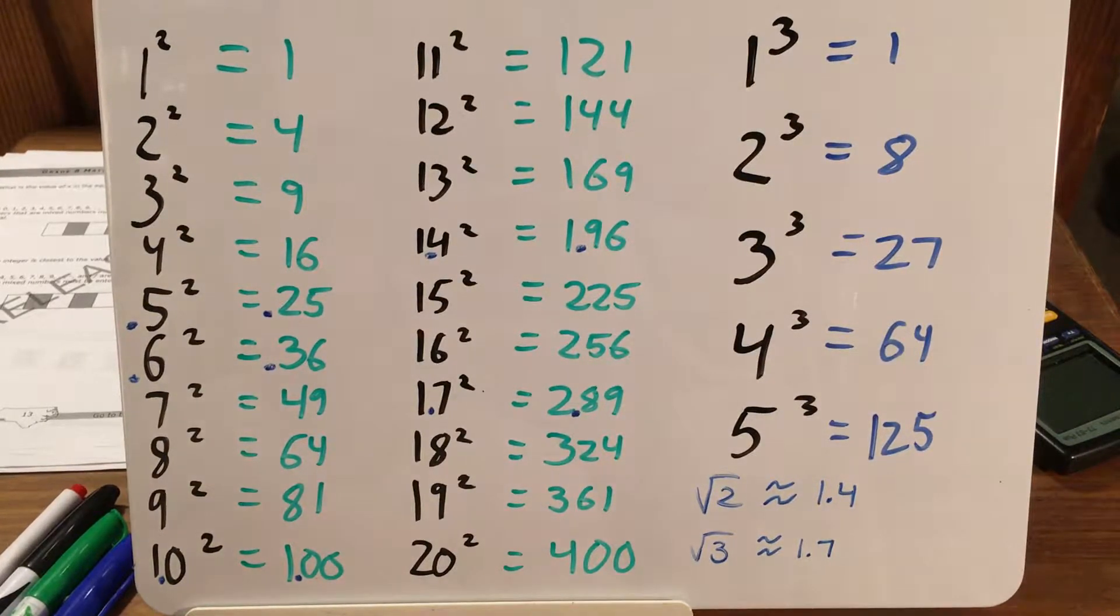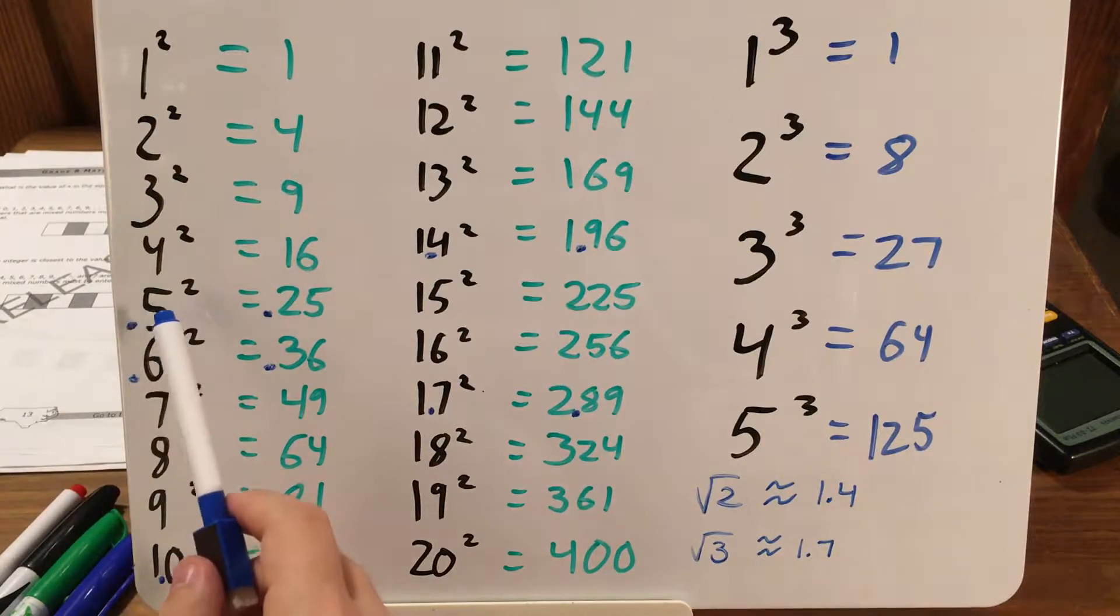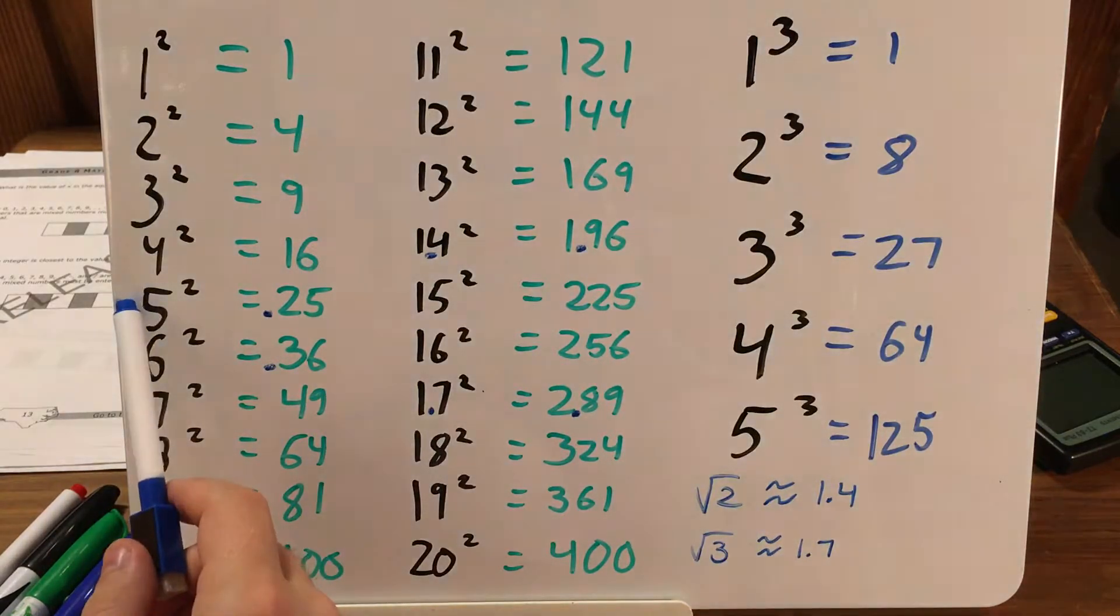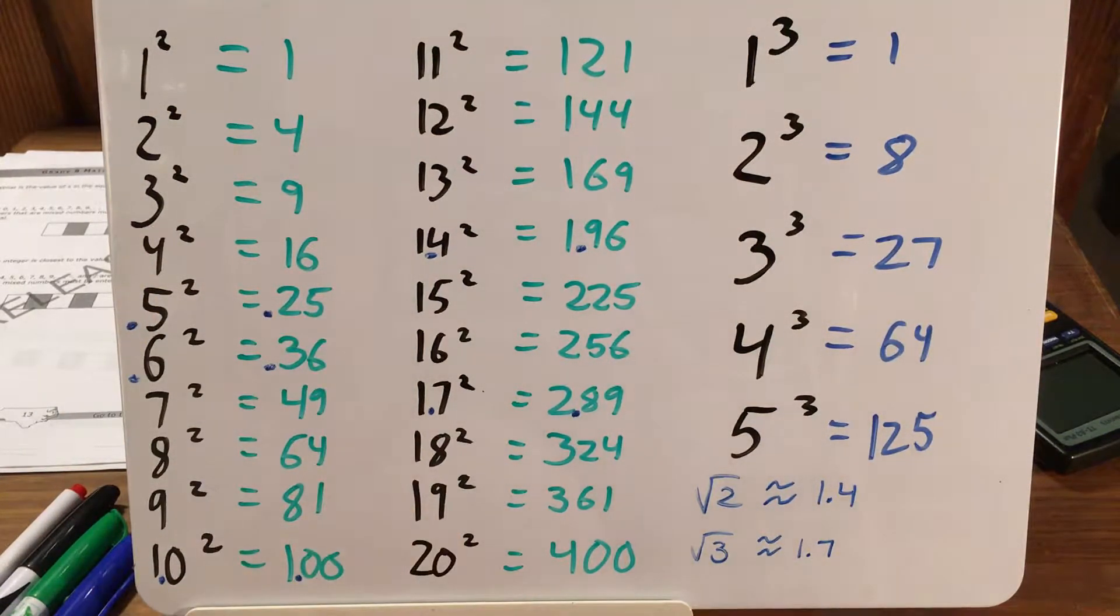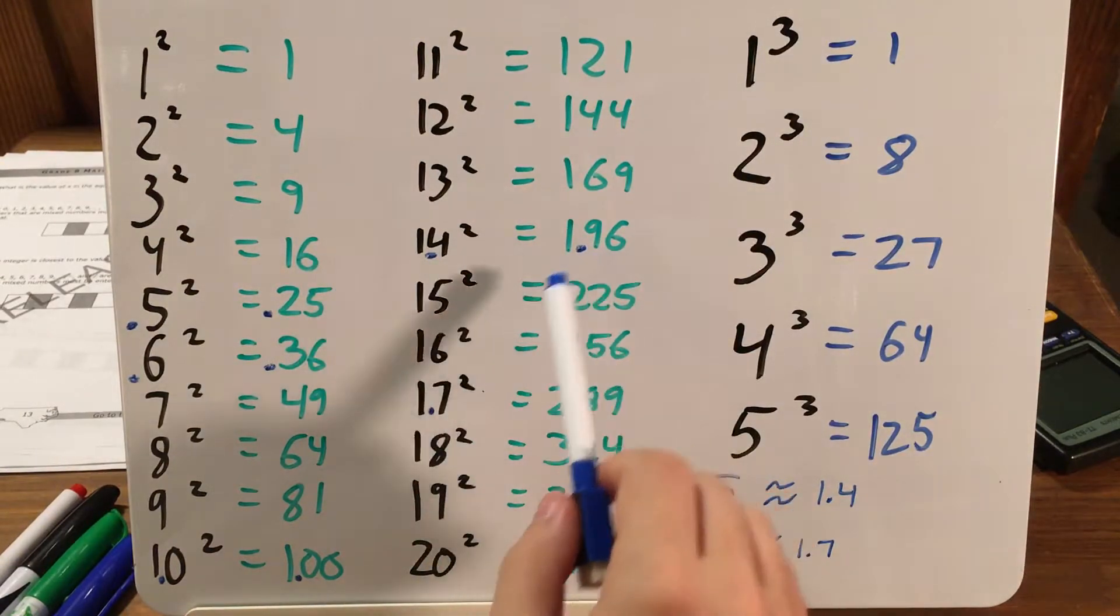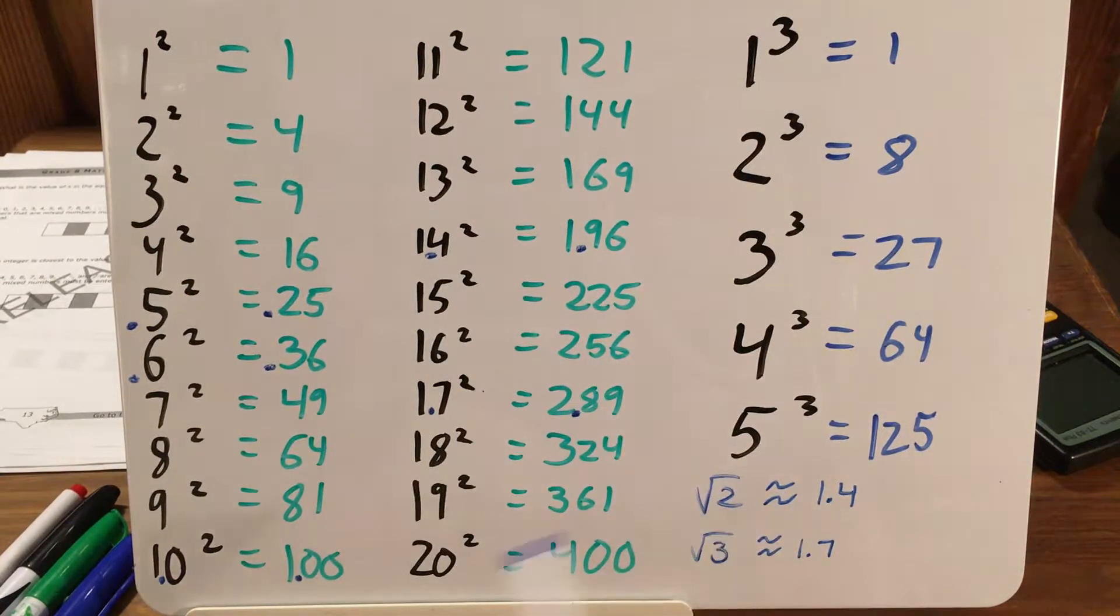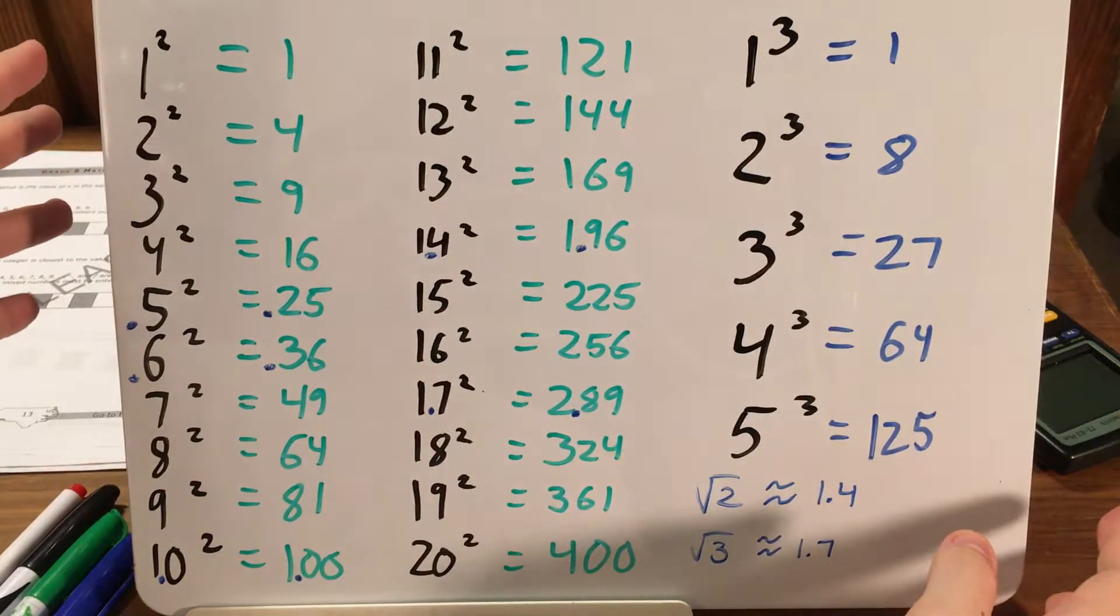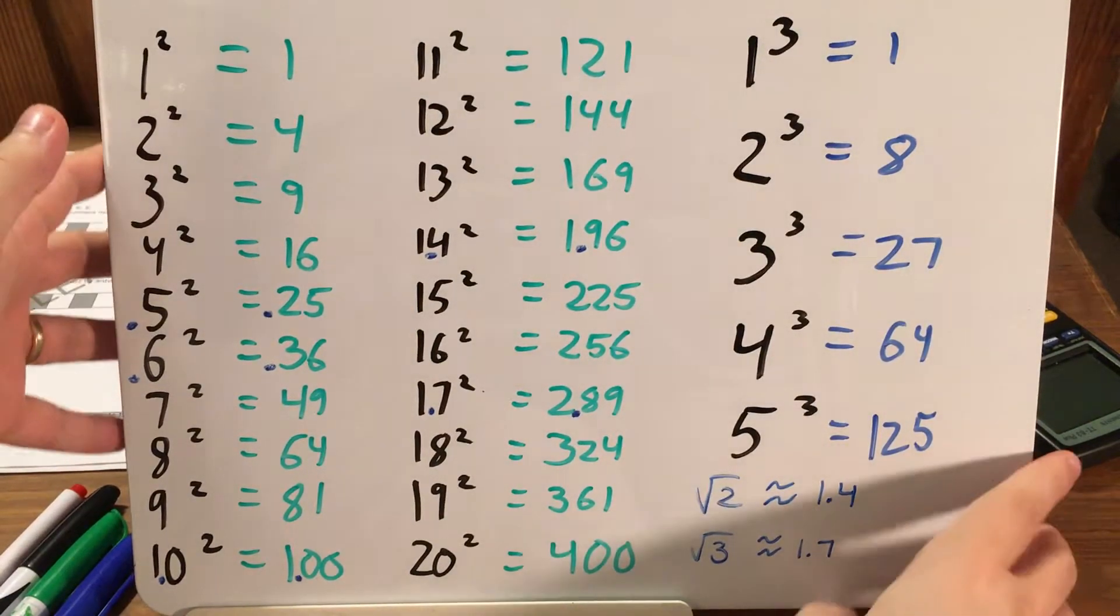Now this is just a trick for estimating square roots based on the fact that if we turn each of these into tenths, we're going to get hundredths. So 1 and 7 tenths squared is going to get us 2 and 89 hundredths, which is about 3. And 1 and 4 tenths squared is going to get us 1 and 96 hundredths, which is very close to 2. But the key with estimating is we want numbers that are close enough that we can work with, not exact numbers.